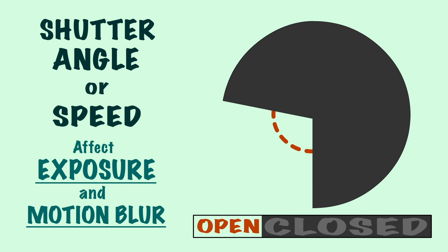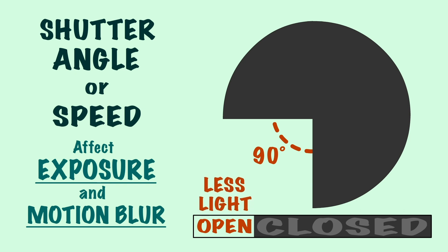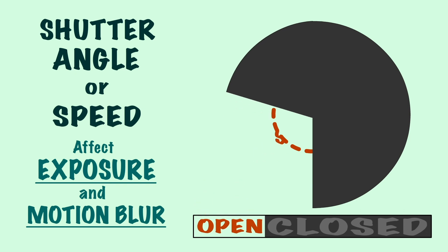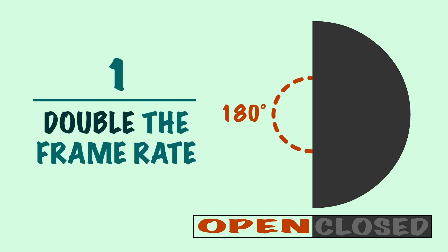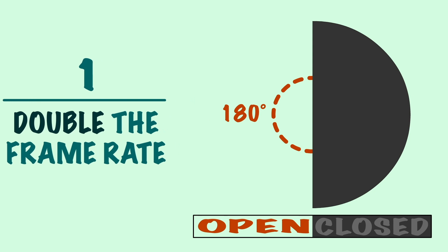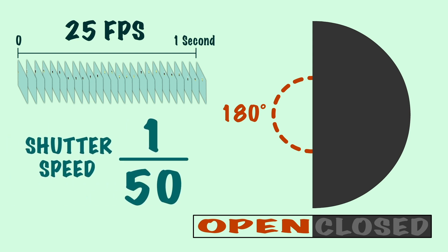When the angle of the shutter is decreased, this reduces the motion blur of a moving object because it's captured faster. However, as a result of this, the light reaching the image will be lessened. As a general rule, you want to have a shutter angle of 180 degrees. This is half the shutter disc and is the most common shutter angle to use. The equivalent of this in shutter speed terms would be 1 over double the frame rate. For example, if the frame rate is 25 frames per second, then the shutter speed will be 1 over 50, meaning 1/50th of a second.